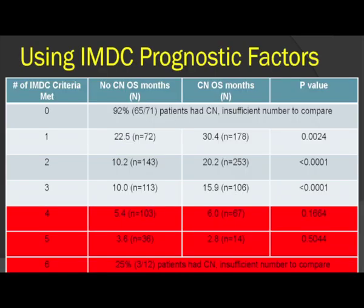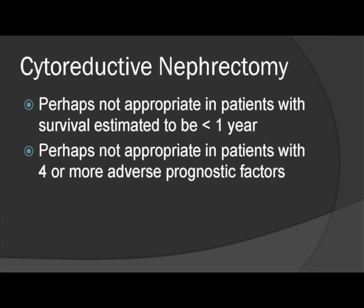Using IMDC prognostic factors, we also analyzed whether benefit from cytoreductive nephrectomy varies by number of adverse criteria. Most favorable-risk patients (zero criteria) got a nephrectomy, so that group couldn't be analyzed. Similarly, patients with all six factors rarely got surgery, so that group was also excluded. Among those with one, two, or three factors, there was a meaningful difference in median overall survival. But with four or five factors, there was little difference, suggesting cytoreductive nephrectomy may not be appropriate in patients with four or more adverse prognostic factors or a projected survival under one year.